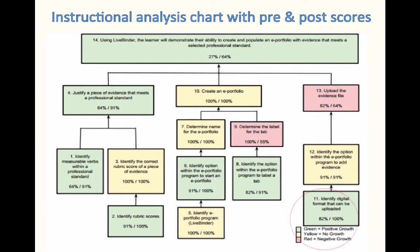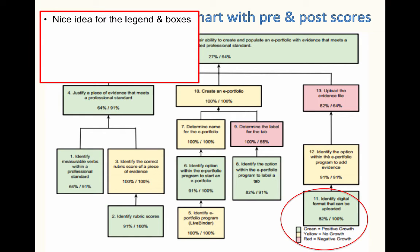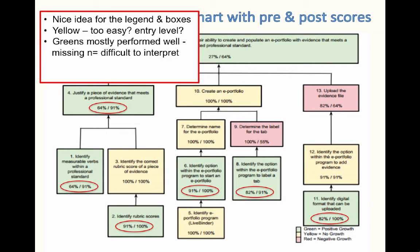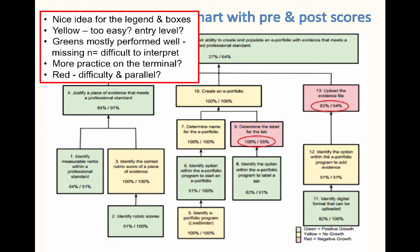Here's another instructional analysis chart. This is a nice idea for the legend in boxes to color code it — the green items are ones with positive growth, yellow had no growth, and red had negative growth. These five items are in yellow with no growth, and four of them are at 100 and the other at 91. You have to discover: were they too easy? Should they actually be entry-level behaviors? The greens mostly performed well, but missing the number of students makes it difficult to interpret — remember you should not use percentages for numbers below 10. This last terminal objective had a post-test score of 64, which is probably not what you'd like — do you need more practice, more instruction? The red items dropped, so you have to look at the difficulty level of the items and whether they were parallel or whether there was just not enough instruction to help the students learn.